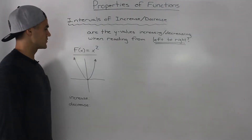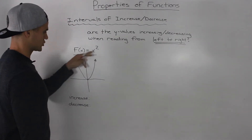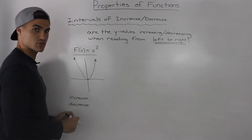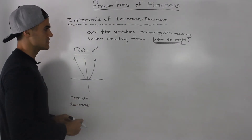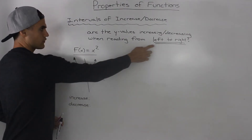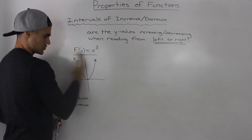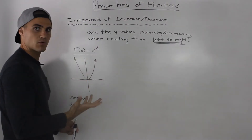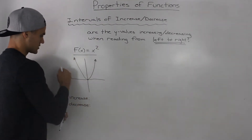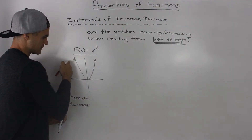Let's show this through an example. Here we have the parent function x squared, and I drew the graph. We want to find what the intervals of increase and decrease are. We read from left to right — going from the leftmost part of the function to the right — and see whether the y values are increasing or decreasing.